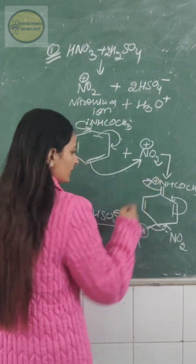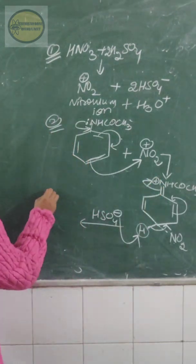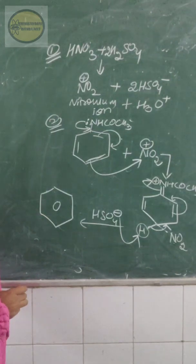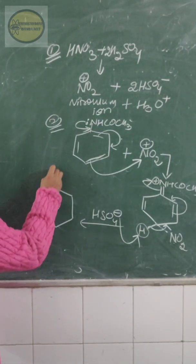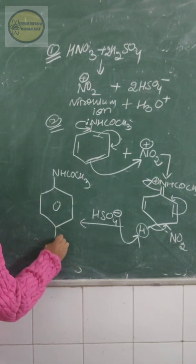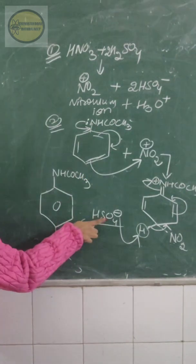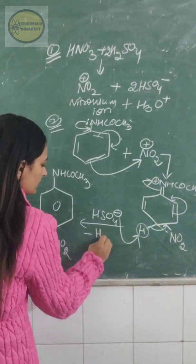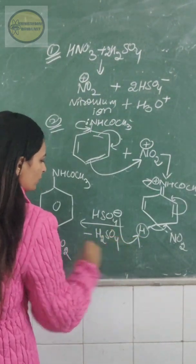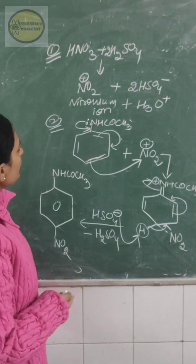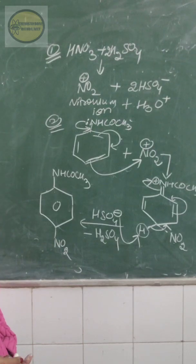And your nitrogen will get neutralized and will get this structure. Now the ring is complete, so you can also show it like this. NHCOCH3 and NO2 over here. Now this HSO4 combined with this proton, so that means what is eliminated? H2SO4. So this is the mechanism for your preparation of this para nitro acetanilide.